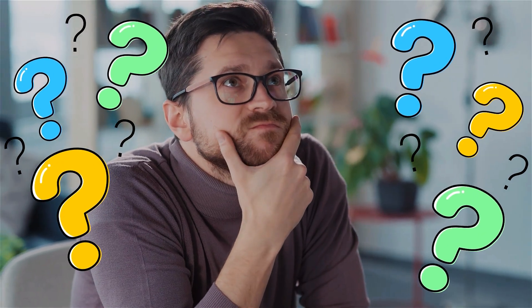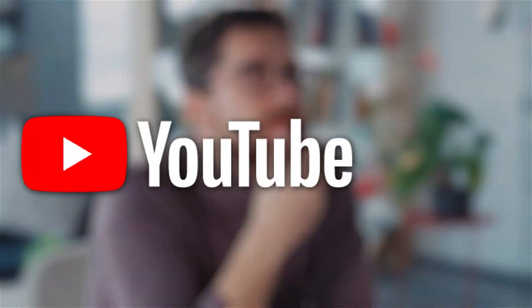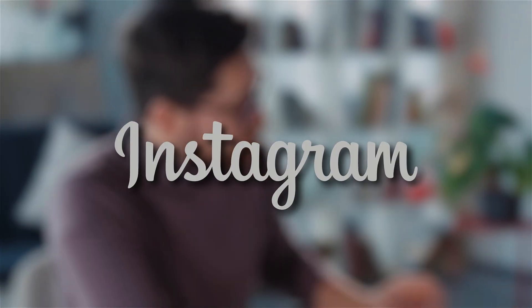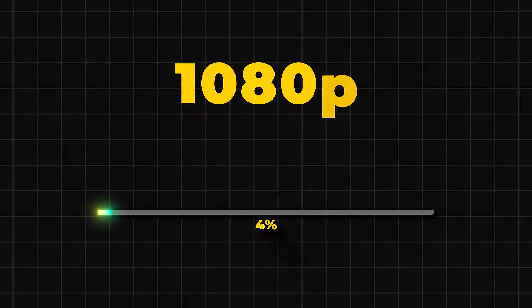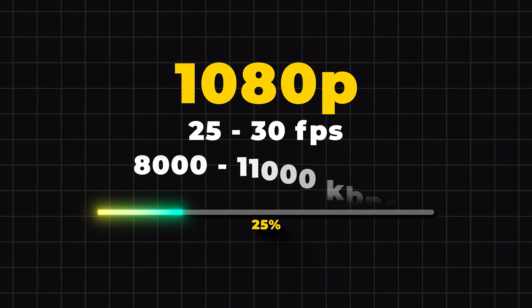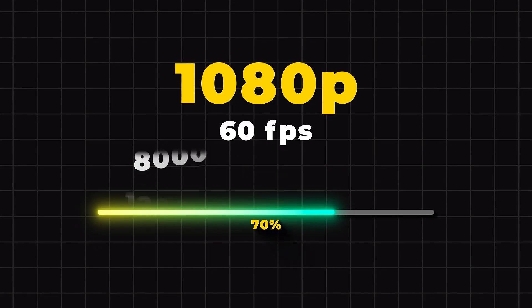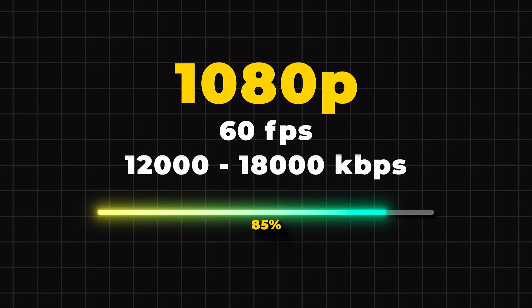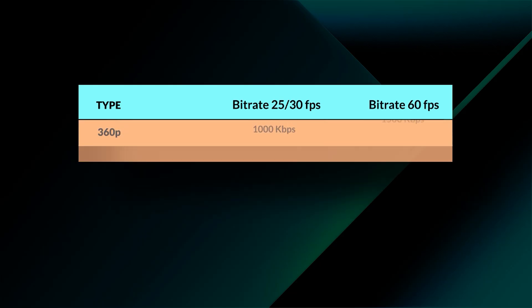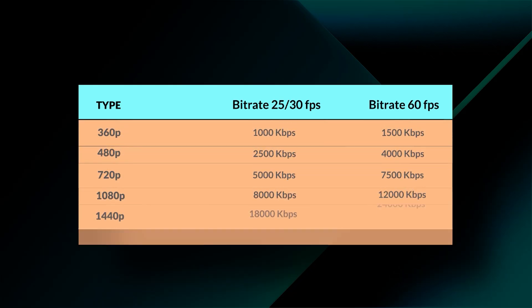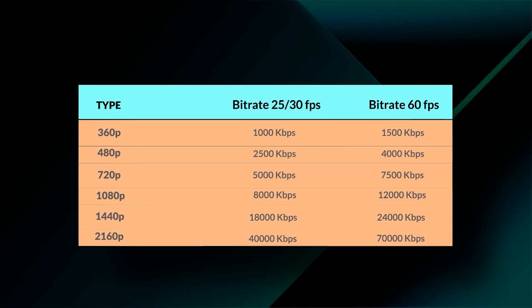Now, the question arises: what is the best BitRate for YouTube, TikTok, or Instagram videos? If you are exporting a 1080p video at 25–30 frames per second, it's better to keep your BitRate at 8000–11000. Or, if you are exporting video at 60 frames per second, then keep your BitRate at 12000–18000 to get a good result. Here is the full chart of best BitRates for different videos. Keeping the right BitRate while exporting your video keeps the balance between the quality and size of your video.